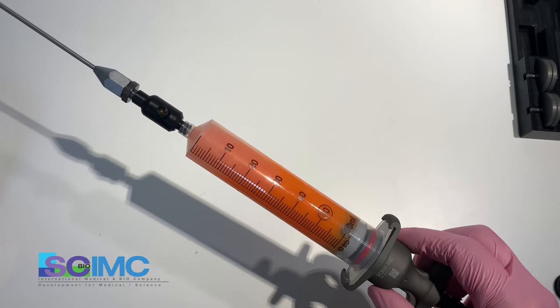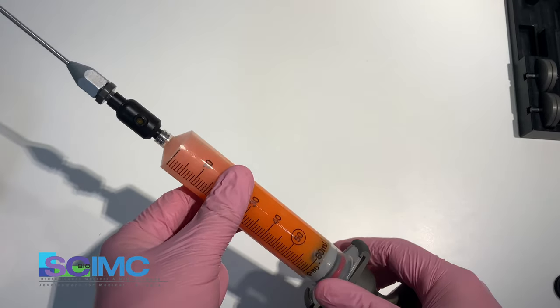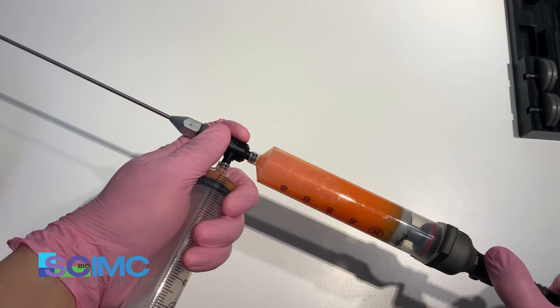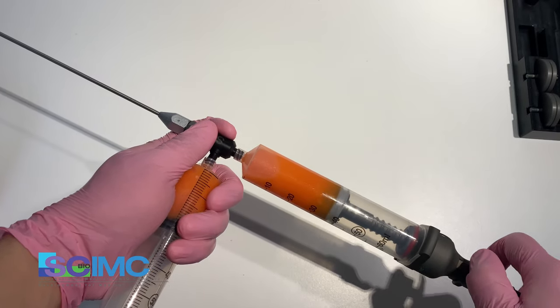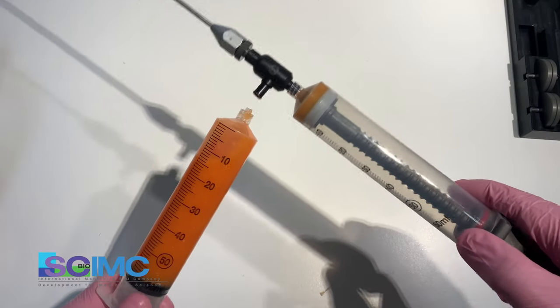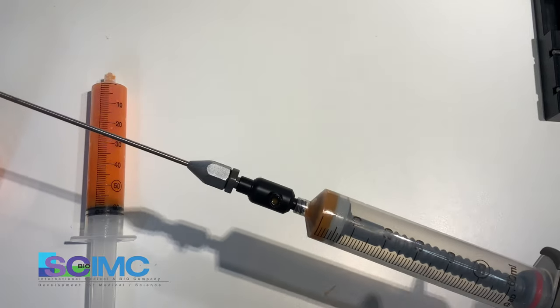When you finish harvesting fat, you don't need to change the syringe. Connect empty syringe to here. Hold tight and push it. Remove the syringe and start harvesting again.